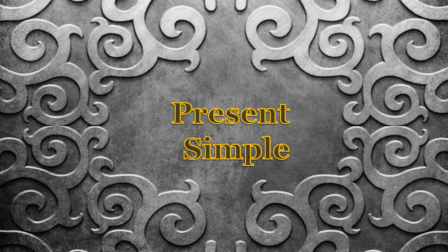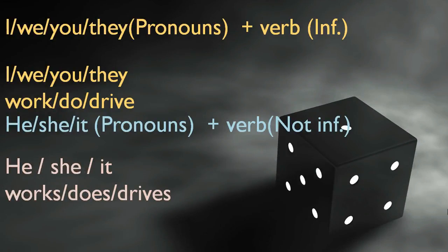What does it consist of? The subject. Pronouns: I, we, you, they — plus the verb infinitive. And what I mean by infinitive is that the verb does not have S, ES, or IES.